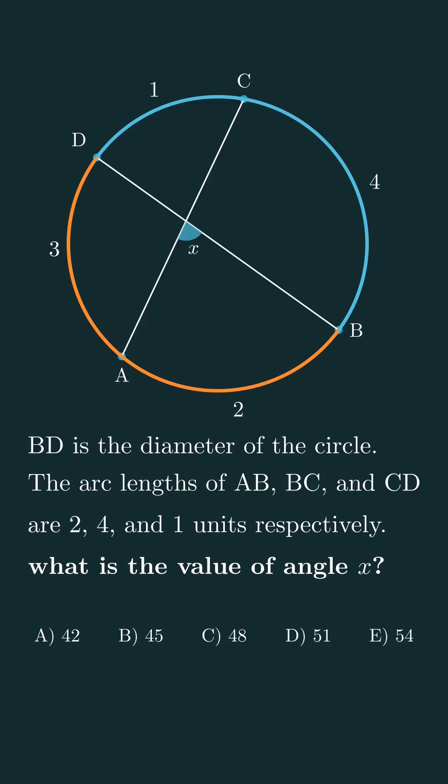And if a full circle is 360 degrees, then each unit corresponds to 36 degrees. That means arc CD spans 36 degrees and arc AB spans 72 degrees.